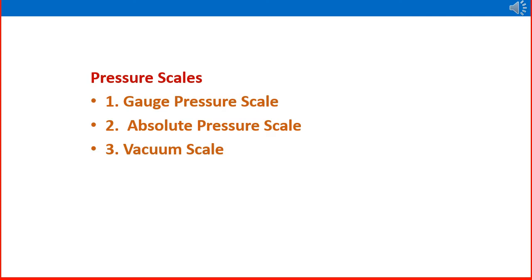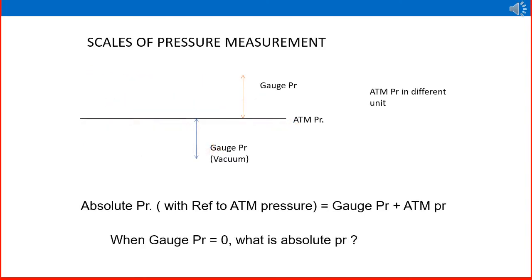Various scales are used for measuring pressure: gauge pressure scale, absolute pressure scale, and vacuum scale. Various gauges use these scales to measure pressure. Let us review and understand these various scales for gauging pressure. The horizontal line represents atmospheric pressure as the reference line.